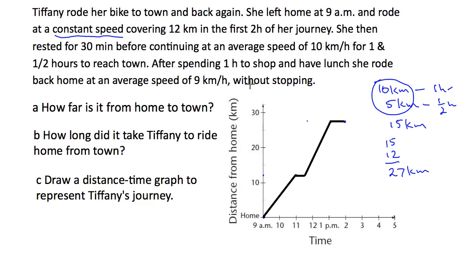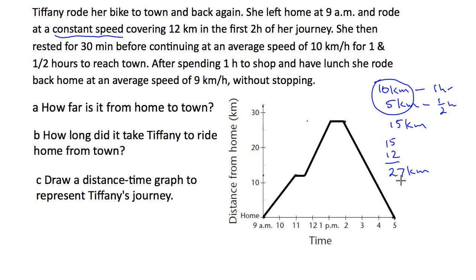She then rode back home at an average speed of 9 kilometers per hour. She was 27 kilometers from home, so dividing 27 by 9 gives a three-hour trip. That's from 2 o'clock until 5 o'clock. We can draw that straight line from here down to zero — that's the trip home. According to this graph, the distance from home to town is 27 kilometers.